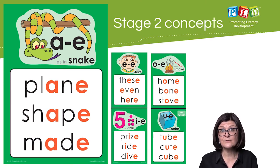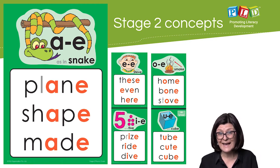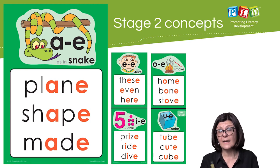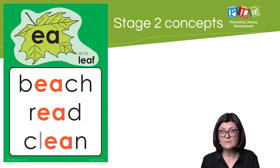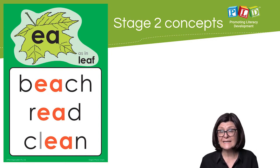Students progress from the short vowels A, E, I to the long vowels A, E, O, I and U. Also contained within Stage 2 is EA as the E sound.